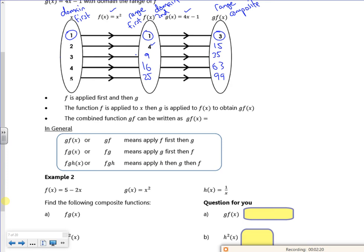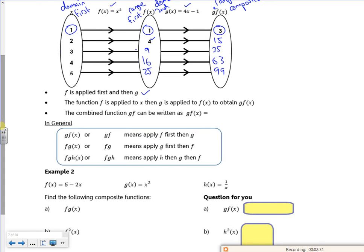So it says f is applied first, and then g. So that would be g of f. The second letter is the one that goes first. So the function f is applied to x, then g is applied to f of x. So that's the idea that I put x in, I get f of x out, but I use that as my x value for the next bit.